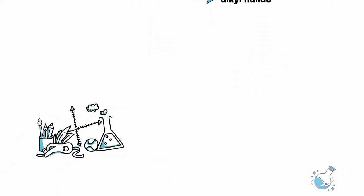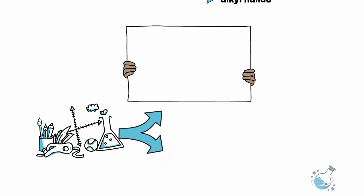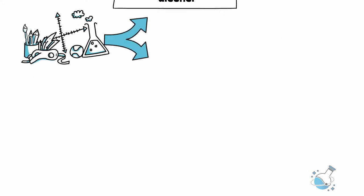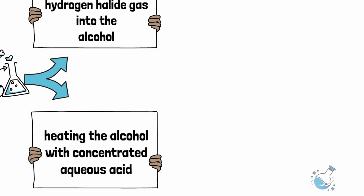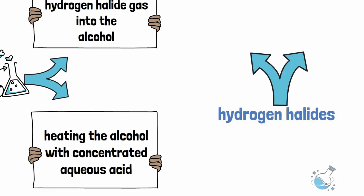The reaction is carried out in two ways: one is by passing the dry hydrogen halide gas into the alcohol, and the other is by heating the alcohol with concentrated aqueous acid. Sometimes, hydrogen halides are generated by the reaction between sulfuric acid and sodium halides.